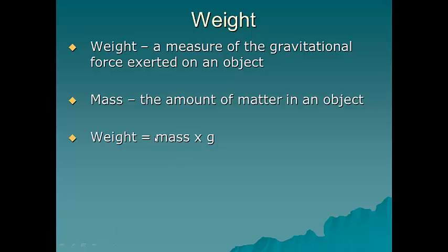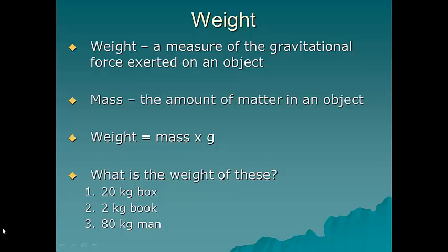To calculate weight, you would do mass times the acceleration due to gravity. So let's do some examples. So what is the weight of these? So for a 20-kilogram box, you would do 20 times 9.8, and you get 196.